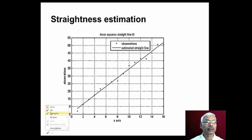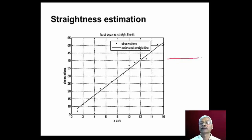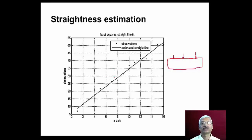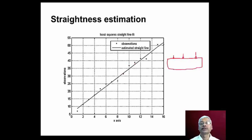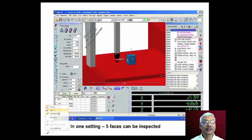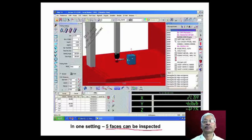Straightness of a surface can also be checked. By selecting data points on the workpiece surface, the CMM can estimate the straightness of that particular surface. The data points obtained by the CMM are used to fit a best-fit line using the software to estimate straightness. In one setting, five faces can be inspected — all features available on those five surfaces can be checked.